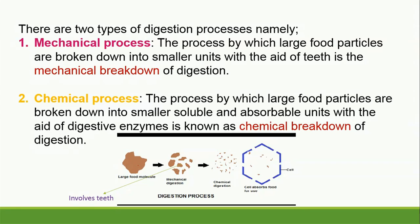There are two types of digestion processes. The first is the mechanical process: the process by which large food particles are broken down into smaller units with the aid of the teeth. So when you put food in your mouth and chew it with your teeth to break it into smaller pieces, that is mechanical digestion. The second is the chemical process: the process by which large food particles are broken down into smaller, soluble and absorbable units with the aid of digestive enzymes — known as chemical breakdown of digestion. The food must be broken down into soluble, small sizes that can enter the cell, and this requires digestive enzymes.